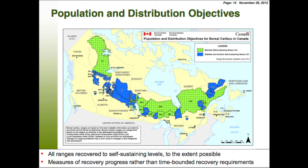We have self-sustaining and non-self-sustaining herds, and we want to recover all herds to self-sustaining levels to the extent possible. Right now there are 14 self-sustaining herds throughout Canada — shown in green — and 29 non-self-sustaining, with 8 that could go either way. In Alberta and Saskatchewan, all herds are not self-sustaining. In Manitoba we start getting a few more self-sustaining herds, and as we move further east and further north, there are more self-sustaining herds.